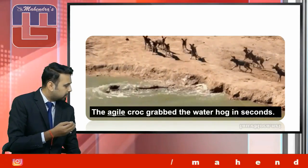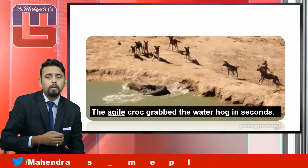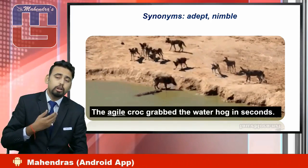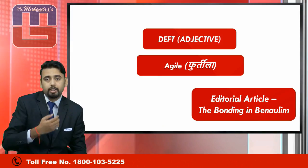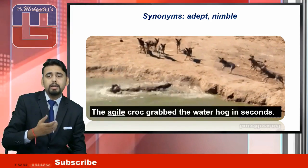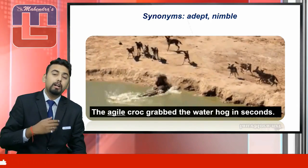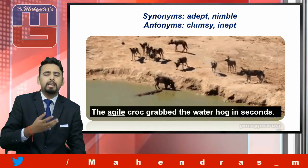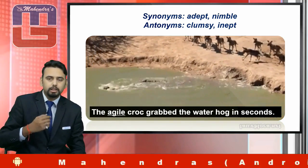Our next word is 'agile.' You can describe the waterhawk — quick in seconds. The synonyms for agile are 'adept' and 'nimble,' spelled N-I-M-B-L-E. The antonyms are 'clumsy,' spelled C-L-U-M-S-Y, and 'inept,' spelled I-N-E-P-T.